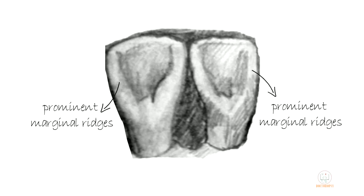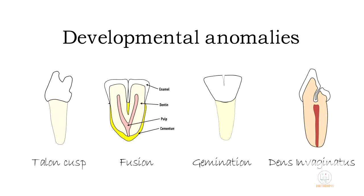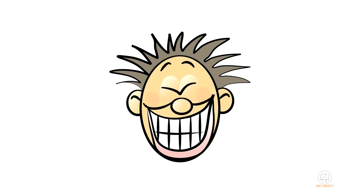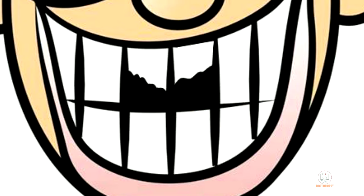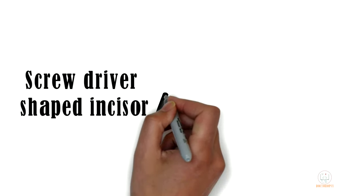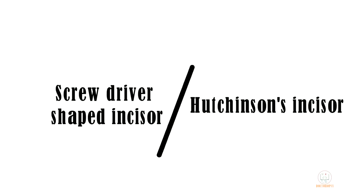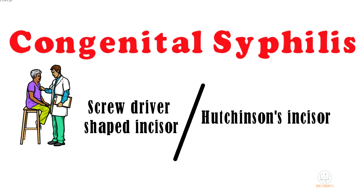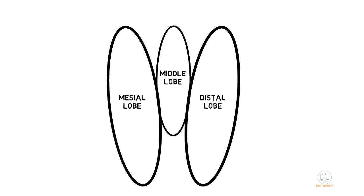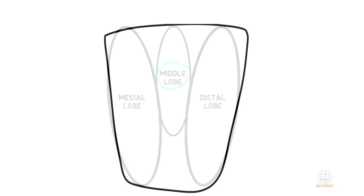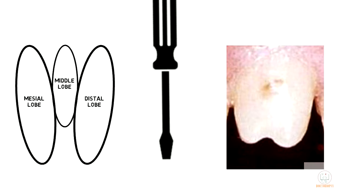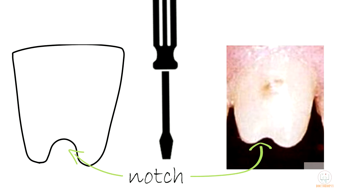Some clinical considerations: shovel-shaped incisors are commonly seen in the Mongoloid race — these incisors have prominent marginal ridges which make their lingual surface very concave. Developmental anomalies like talon cusp, fusion, gemination, and dens invaginatus are more common in maxillary central incisors. Due to their location, maxillary central incisors are the teeth most prone to trauma. Screwdriver-shaped incisors, or Hutchinson's incisors, are a characteristic clinical feature seen in patients with congenital syphilis, forming due to developmental failure of the middle lobe, making the tooth rhomboidal with the shorter side towards the incisal ridge — sometimes a small notch is seen in the middle of the incisal ridge.